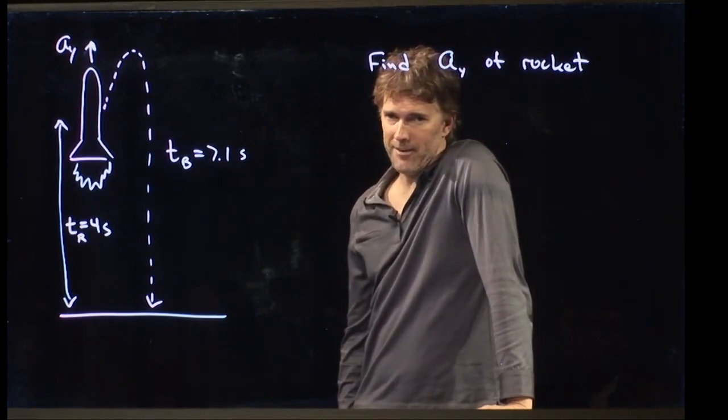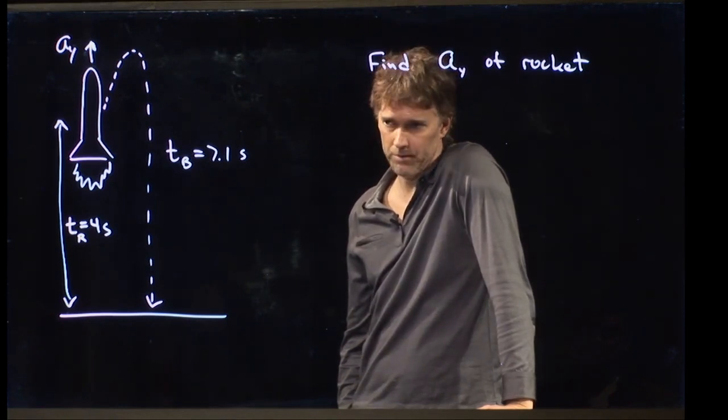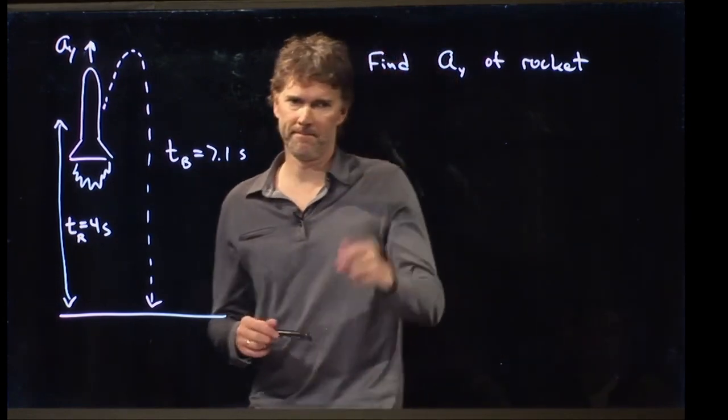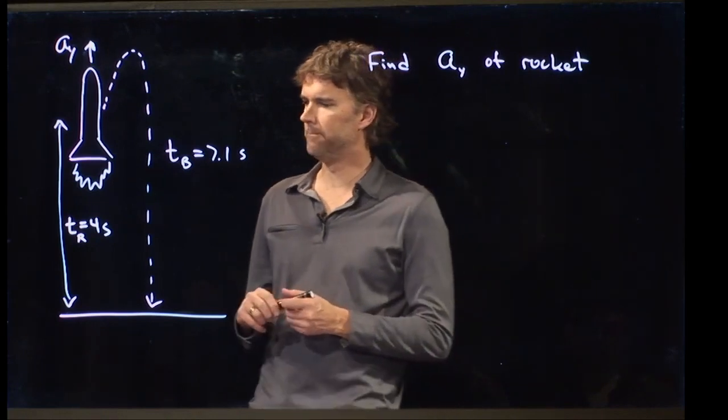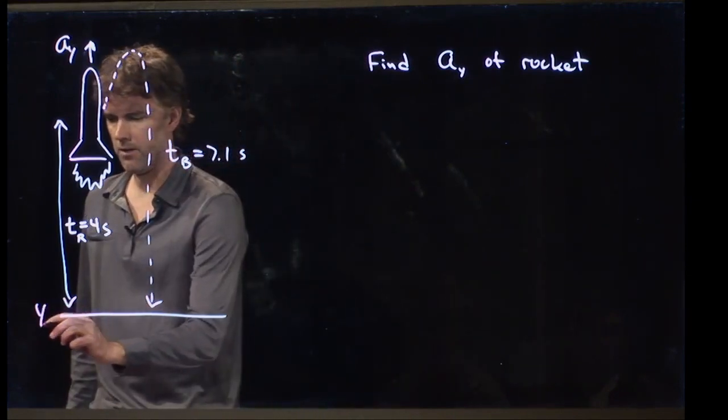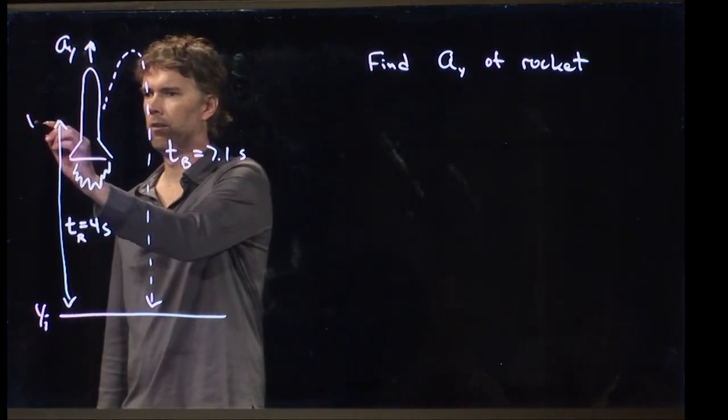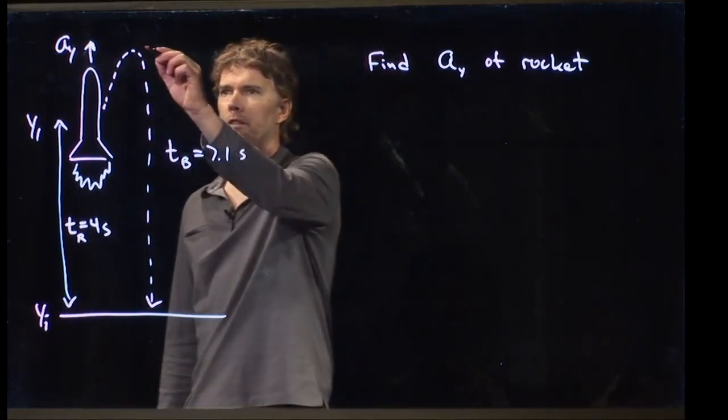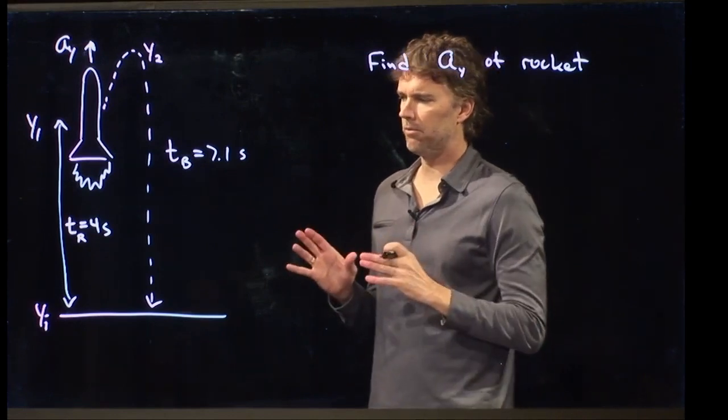This looks challenging, right? We don't know a lot of information here. What sort of information maybe would help us? If we knew something about the heights here, that would be pretty good. So why don't we label a couple heights? This is the initial position of everything that we can call 0. Let's call this height y1, which is how high is the rocket when the bolt comes off. Let's call this height up here y2, how high does the bolt actually get?